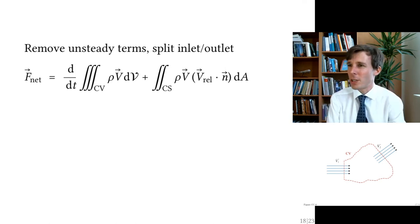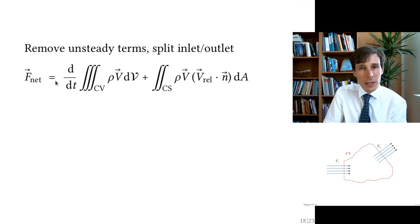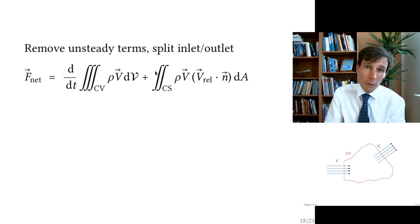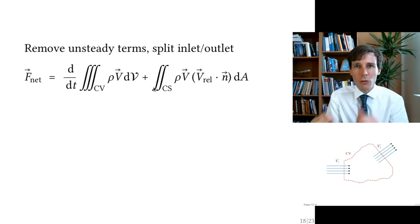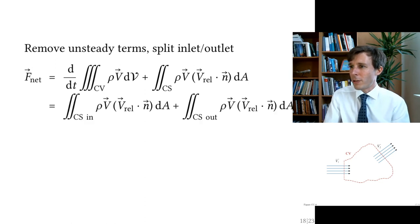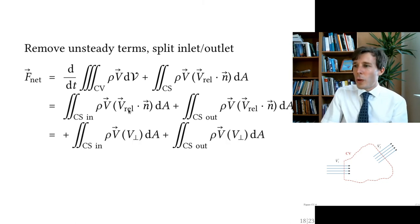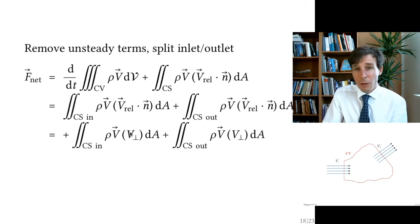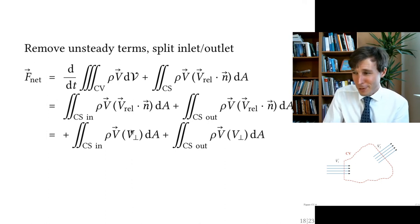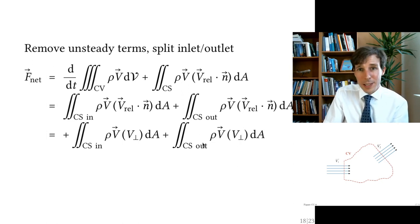We have the general equation for net force. First, this is a steady flow, so the time-derivative term goes to vector zero. The remaining integral splits into one for the inlet and one for the outlet. We replace V_rel dot N with the length of V_orthogonal — positive outwards at the outlet and negative inwards at the inlet. So the inlet integral carries a negative sign and the outlet integral carries a positive sign.